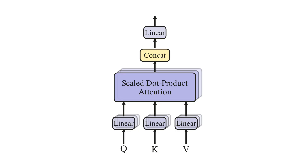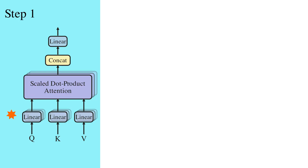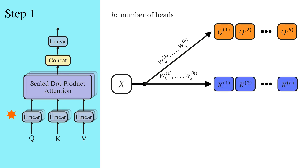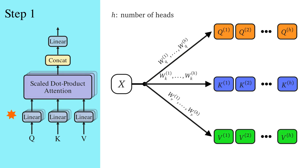This is the full diagram of multi-head attention proposed in 'Attention Is All You Need'. First we define how many heads to use — the symbol h indicates the number of heads, typically set to 8. After that, we obtain h sets of Q, K, and V matrices: Q1 to Qh, K1 to Kh, and V1 to Vh. To get these matrices, we multiply X h times with h different weight matrices for Q, K, and V respectively.